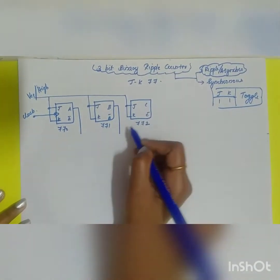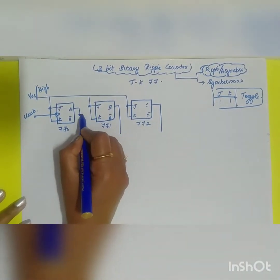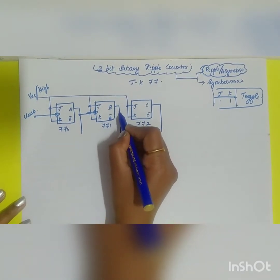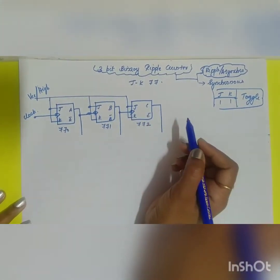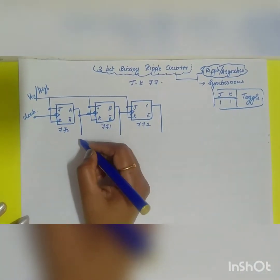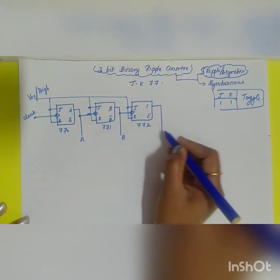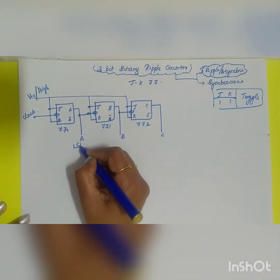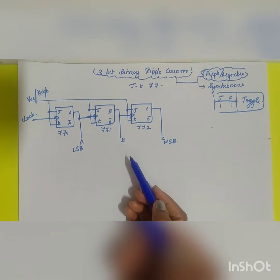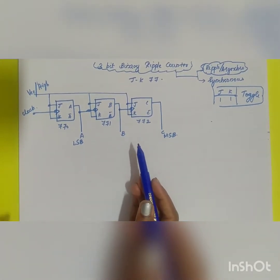The output of one flip-flop serves as the clock input to the next flip-flop, and so on. The outputs are A, B, and C, where A is the LSB bit and C is the MSB bit. This is the diagram of the 3-bit binary ripple counter.